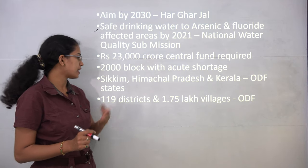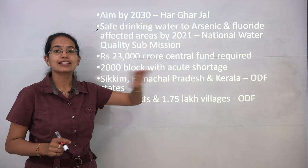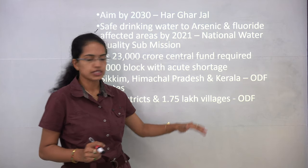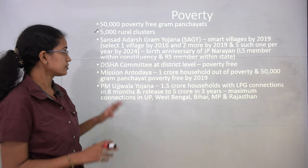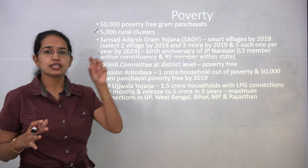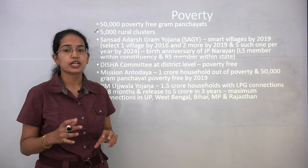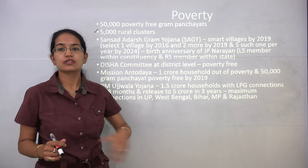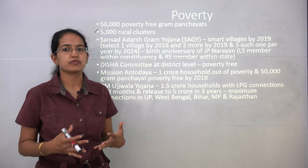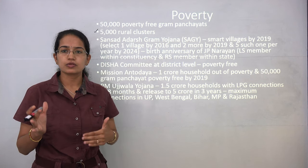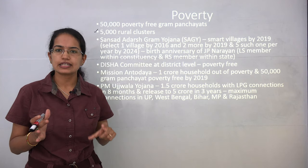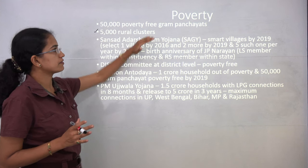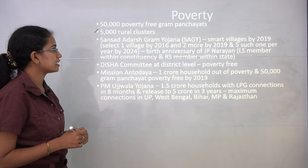119 districts and 1.7 lakh villages have come under ODF. From the prelims perspective, important facts must be known. When studying rural poverty, for example, all state-wide programs and basic data on water conservation must be covered. On poverty, nearly 50,000 poverty-free gram panchayats have been declared.